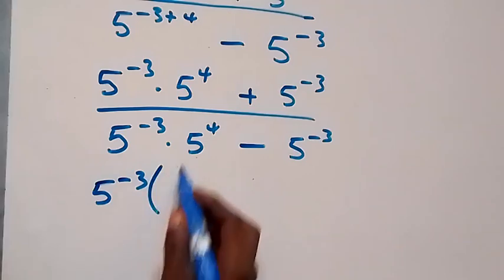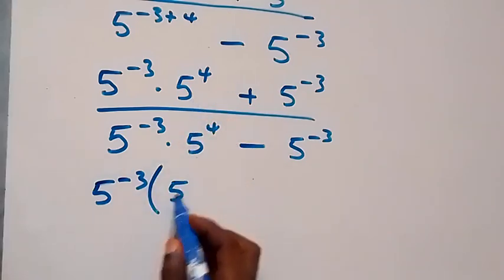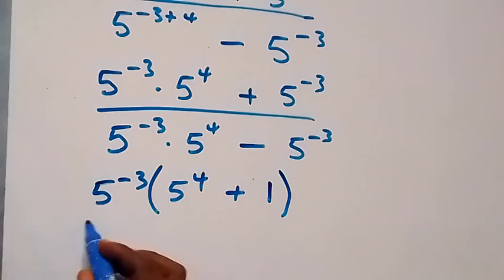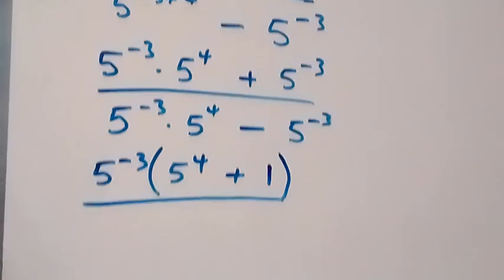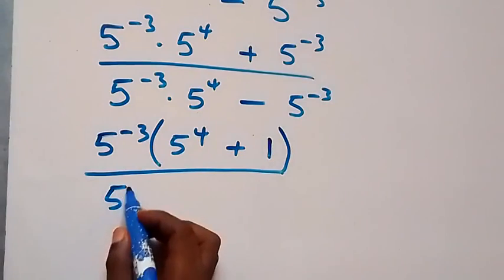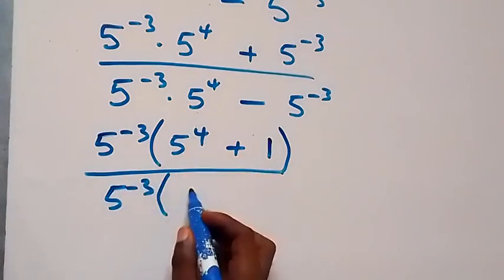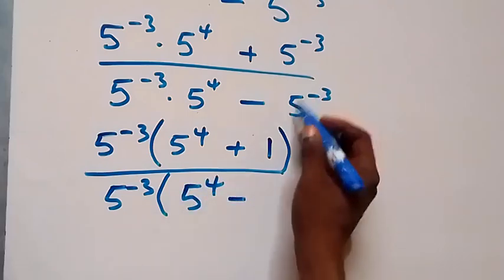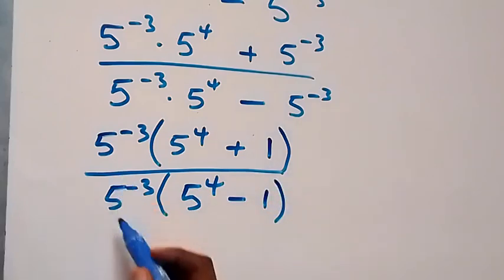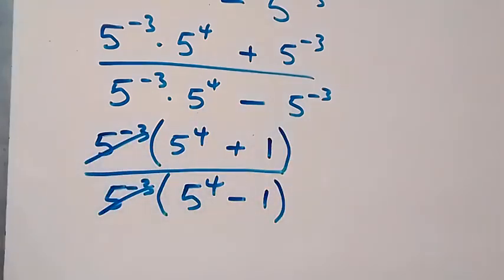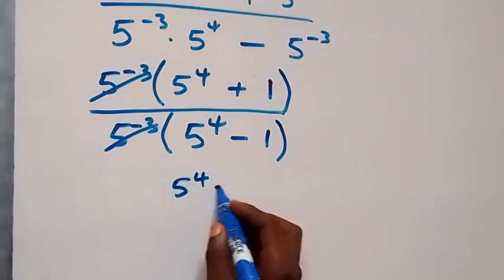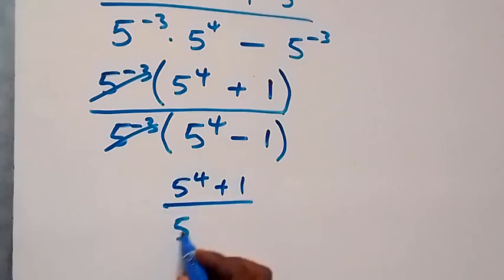When we look at this, we have 5 raised to power minus 3 common in both the numerator and denominator. When we factor it out, we get 5 raised to power minus 3 times bracket 5 raised to power 4 plus 1, divided by 5 raised to power minus 3 times bracket 5 raised to power 4 minus 1. The 5 raised to power minus 3 cancels out, leaving us with 5 raised to power 4 plus 1 divided by 5 raised to power 4 minus 1.